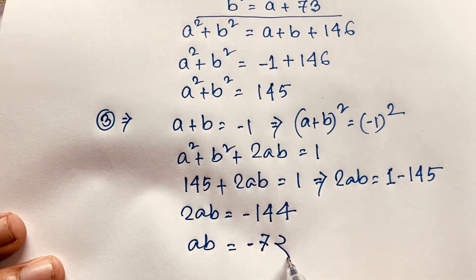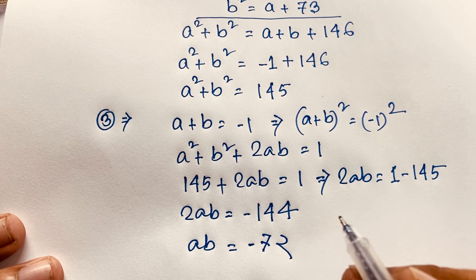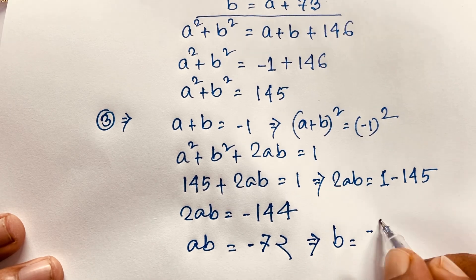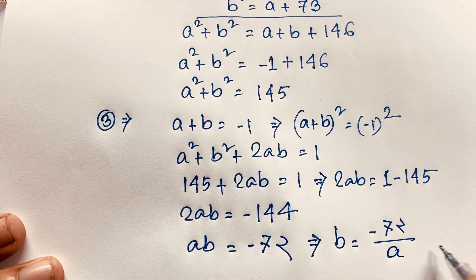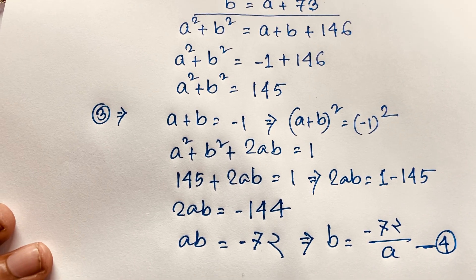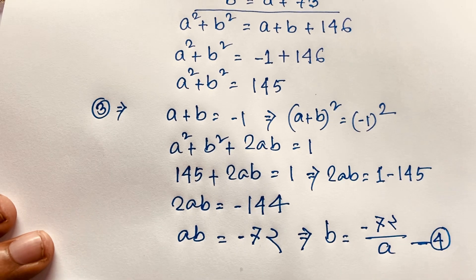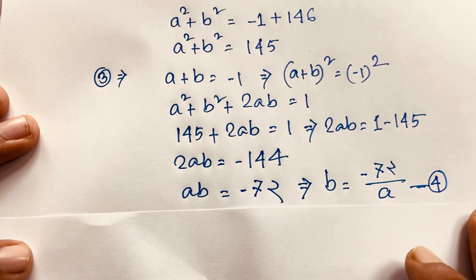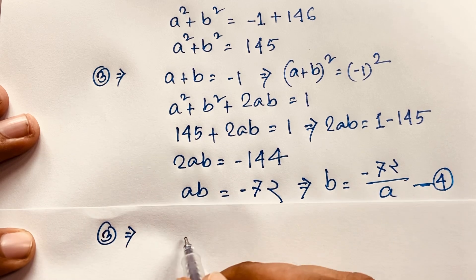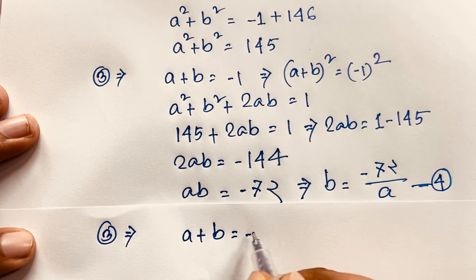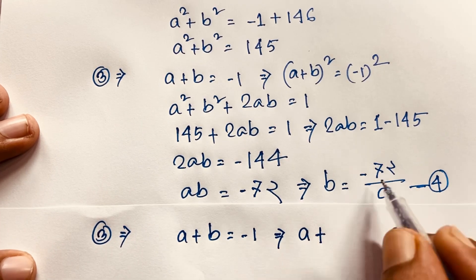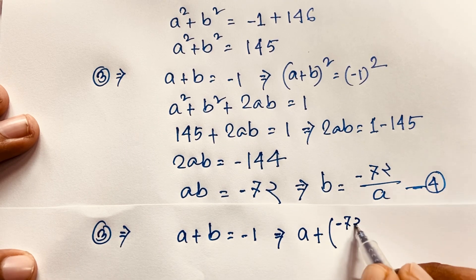Dividing both sides by 2, we find ab equals negative 72. So b equals negative 72 over a. Now taking our third equation again, a plus b equals negative 1, and substituting b equals negative 72 over a.